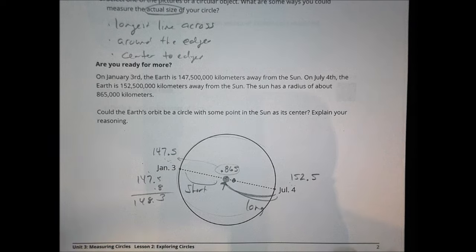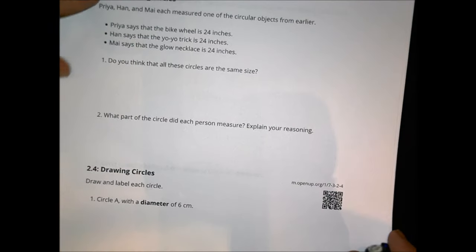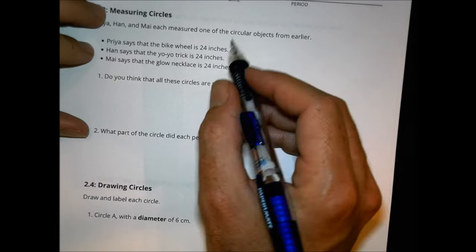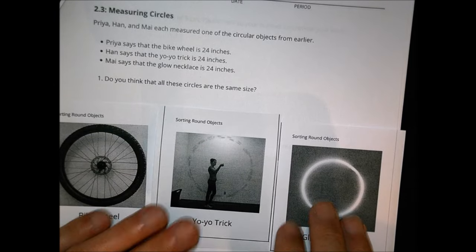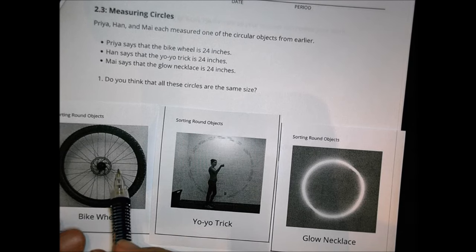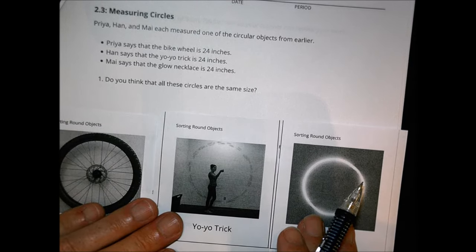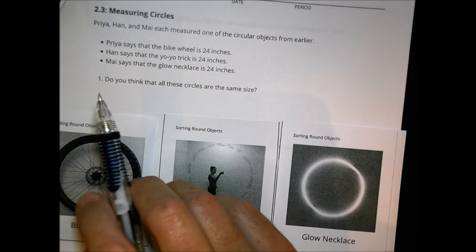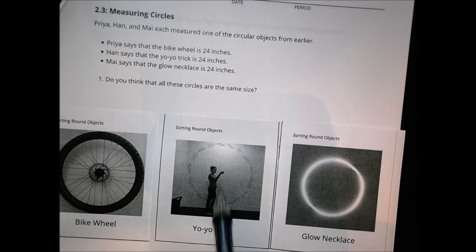Let's look at Activity 3 on measuring circles. Priya, Han, and May each measured one of the circular objects from earlier. One measured the bike wheel at 24 inches, one measured the yo-yo trick at 24 inches, and one did the glow necklace at 24 inches. Do you think all these circles are the same size?